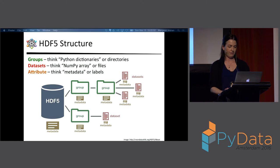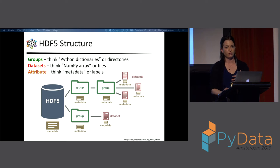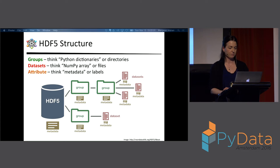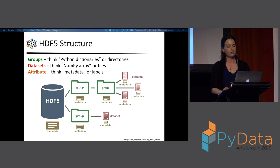The structure of HDF5 has basically three things to think about: groups, datasets, and attributes. An HDF5 file has two objects — groups and datasets. Groups are like Python dictionaries or folders/directories. Datasets act very similarly to NumPy arrays, like files within folders. Attributes are the metadata that can be on a group or dataset — like a label on a file or directory. The schematic shows how groups can be within groups and datasets can be within groups. Every HDF5 file has a root directory.